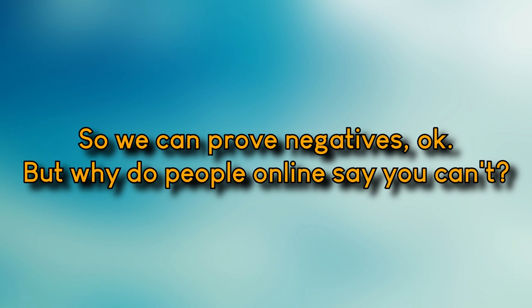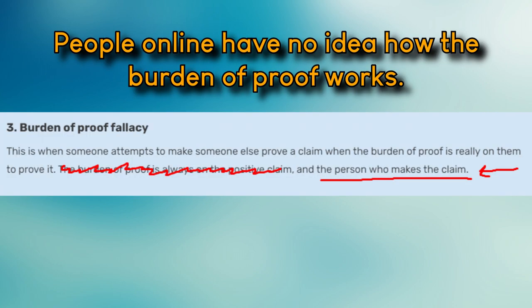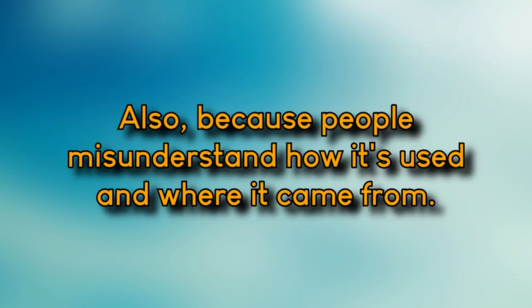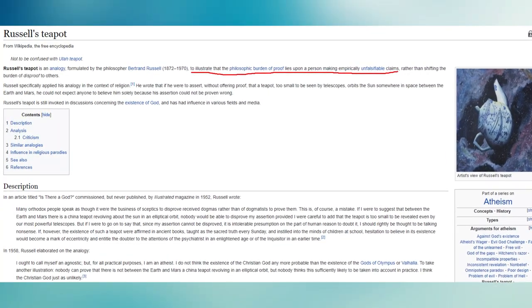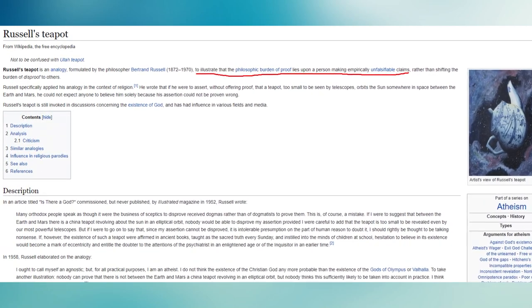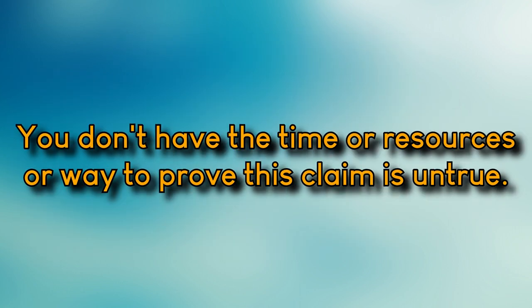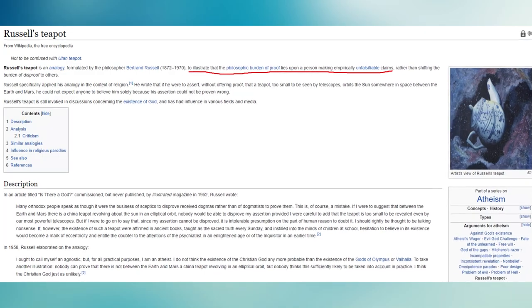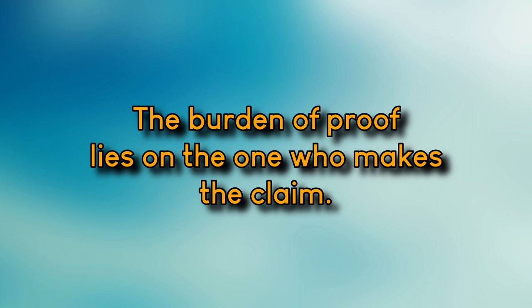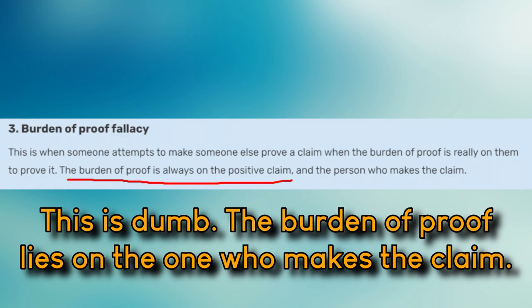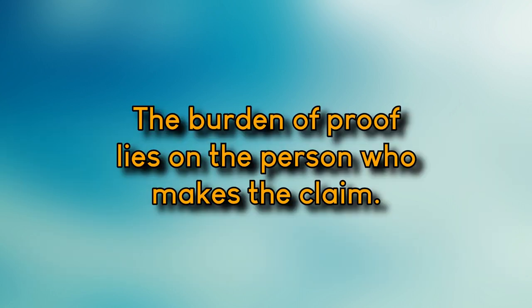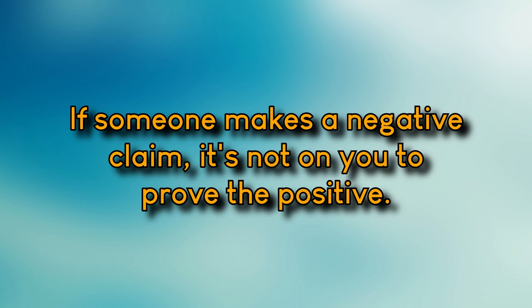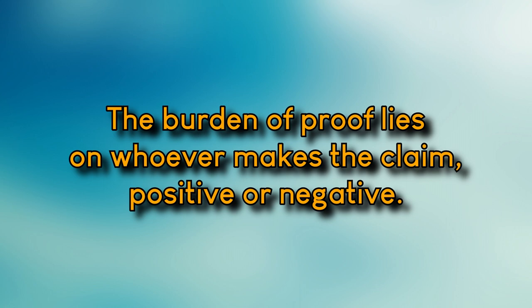So if you can prove a negative, as shown with deductive arguments, why do people constantly parrot the idea that you can't? It stems from a misunderstanding of where the phrase came from — Russell's teapot: a thought experiment positing a teapot orbiting some distant planet that you can't prove doesn't exist. But Russell isn't saying you can't prove a negative. He's saying the burden of proof lies on the one who makes the claim. And the burden of proof is not specifically on the positive claim — it lies on whoever makes any claim, positive or negative.